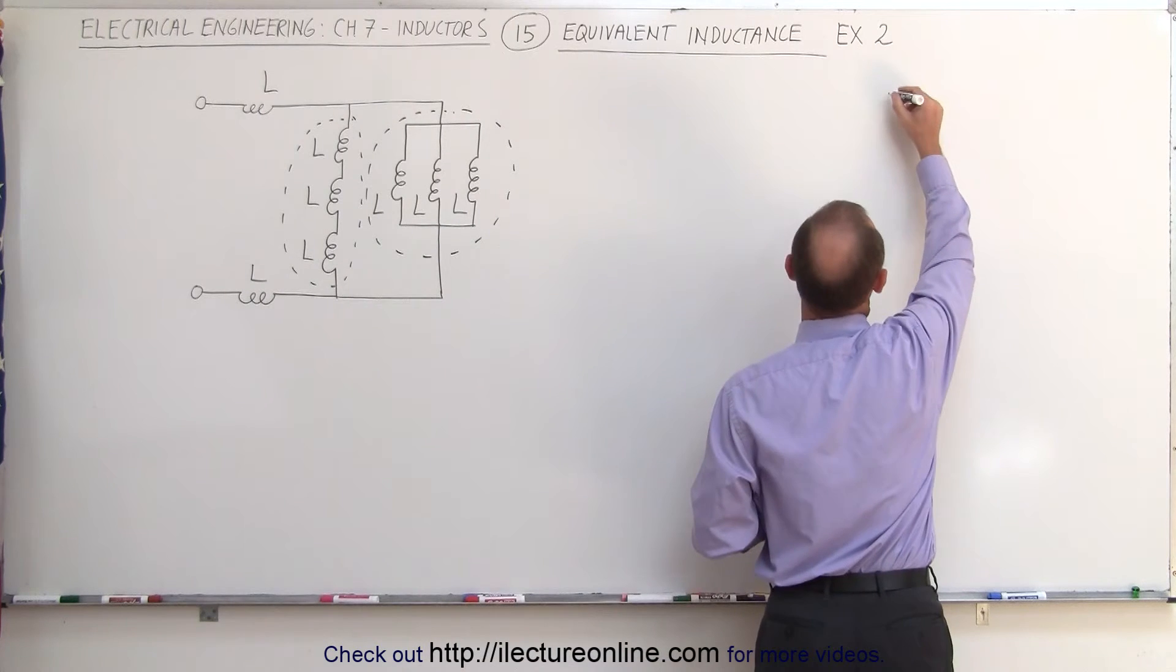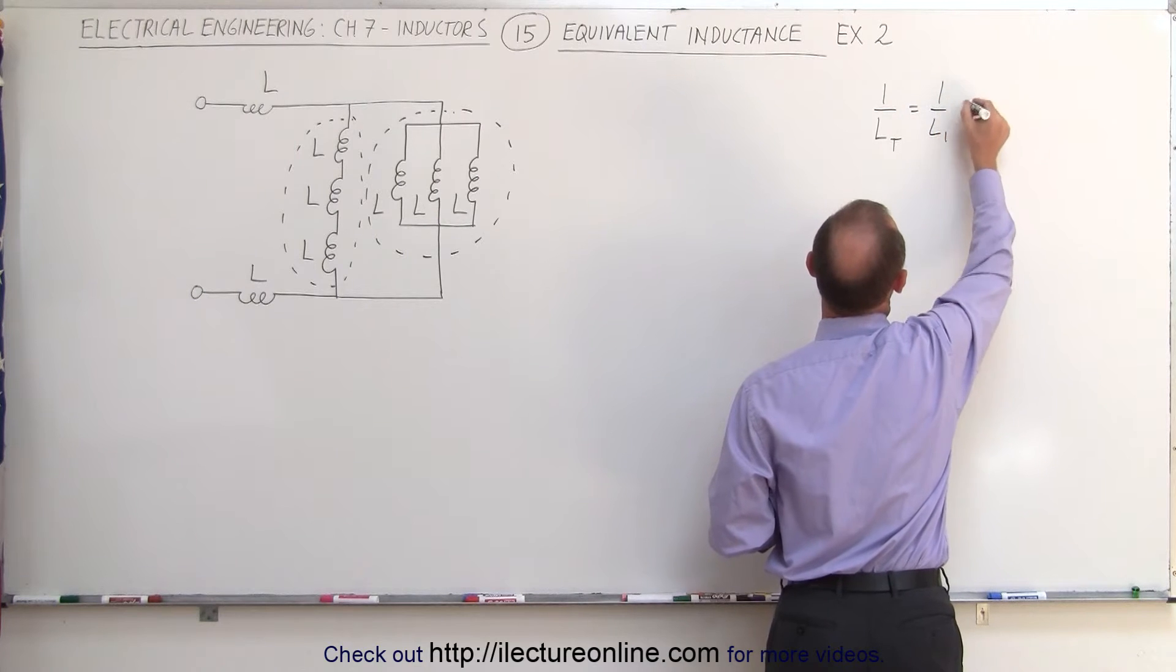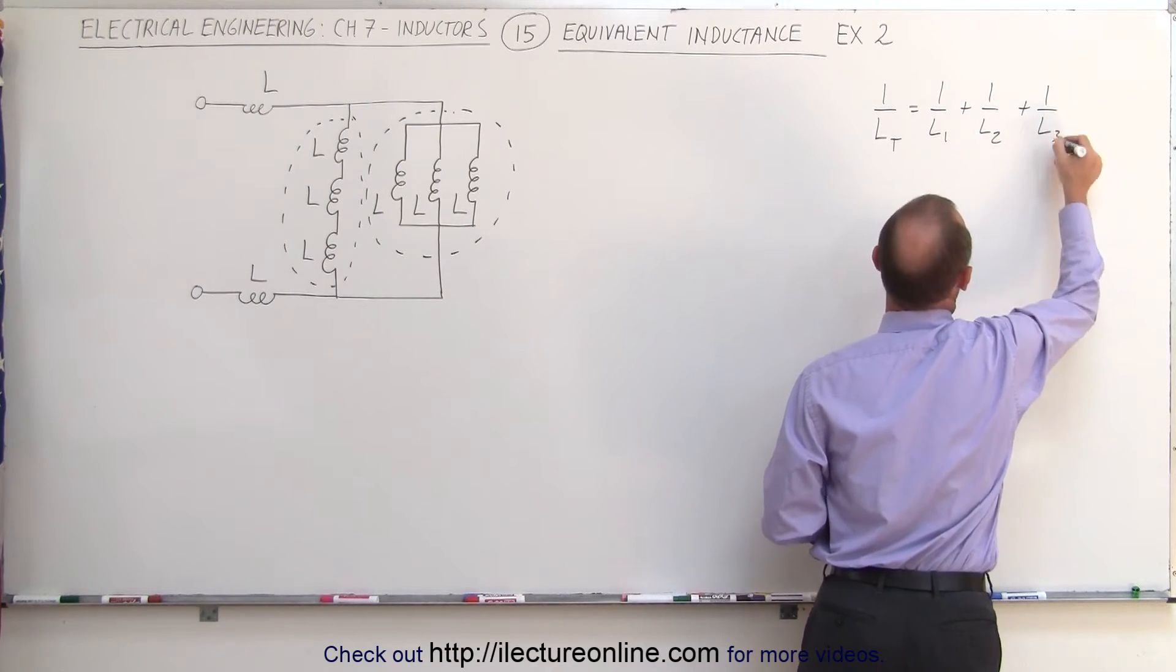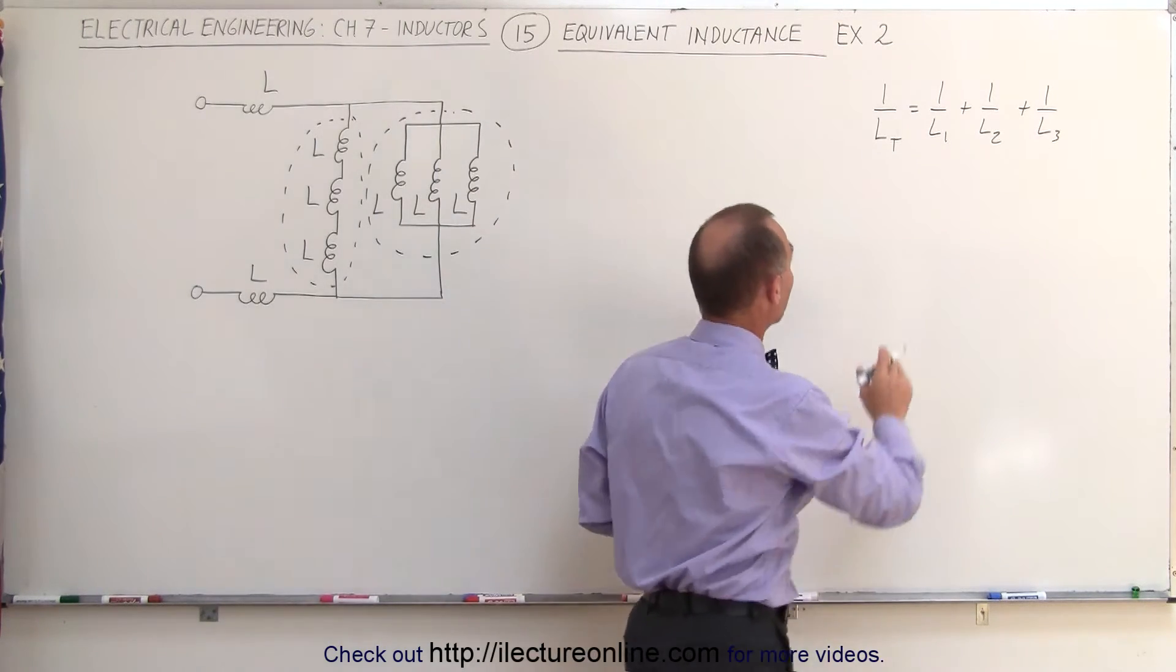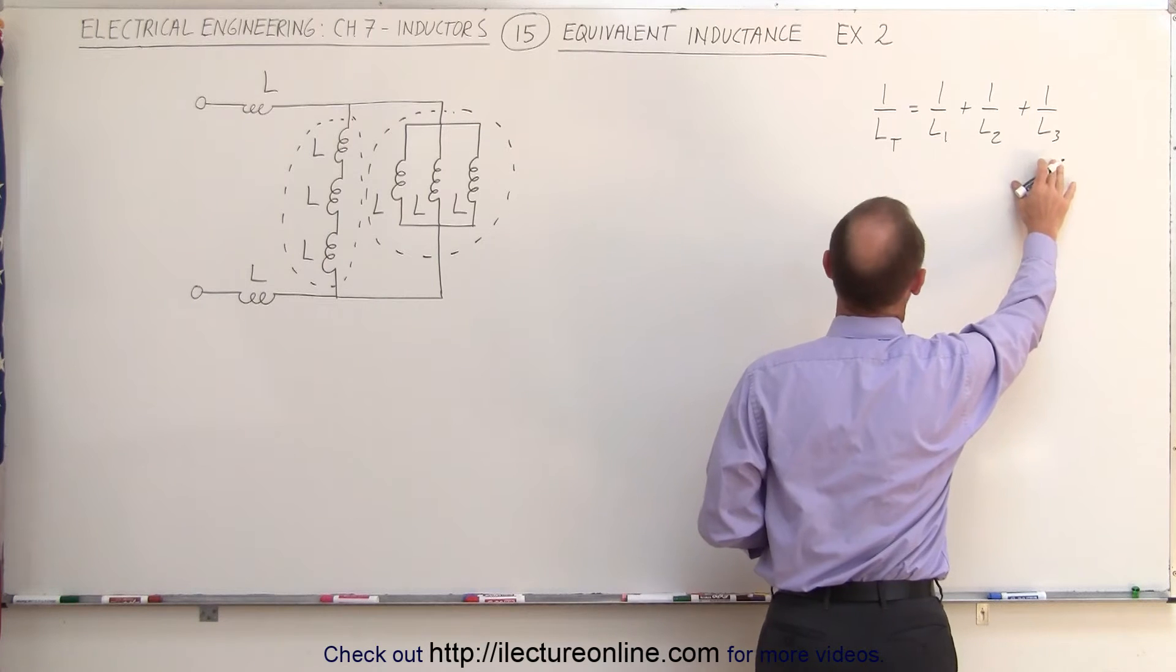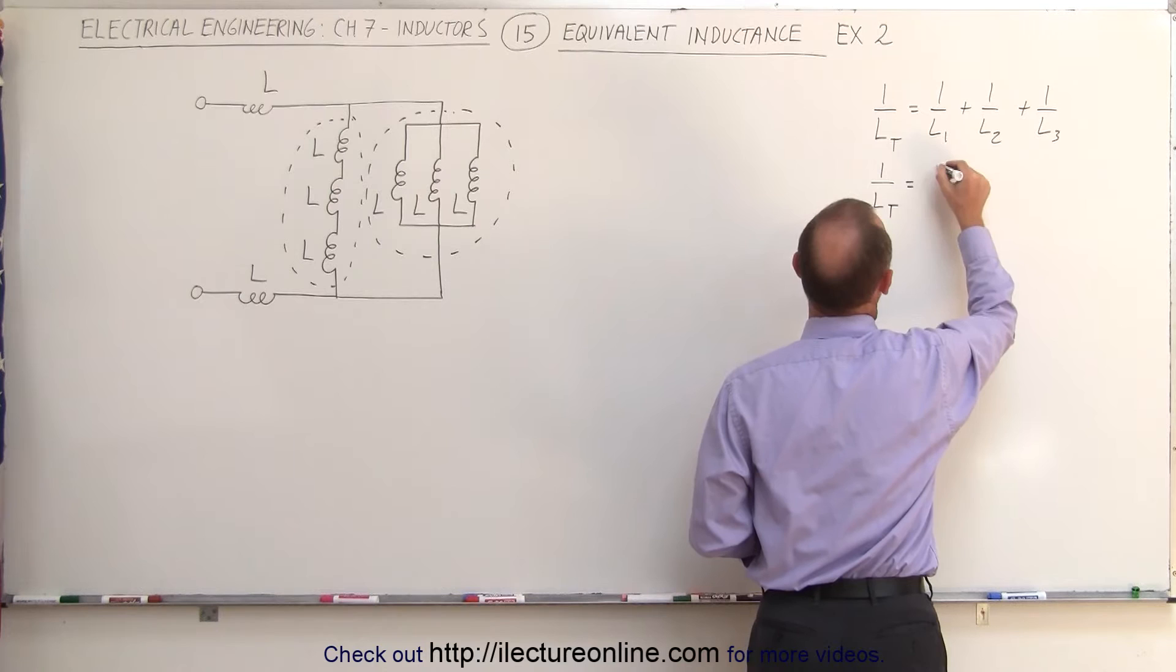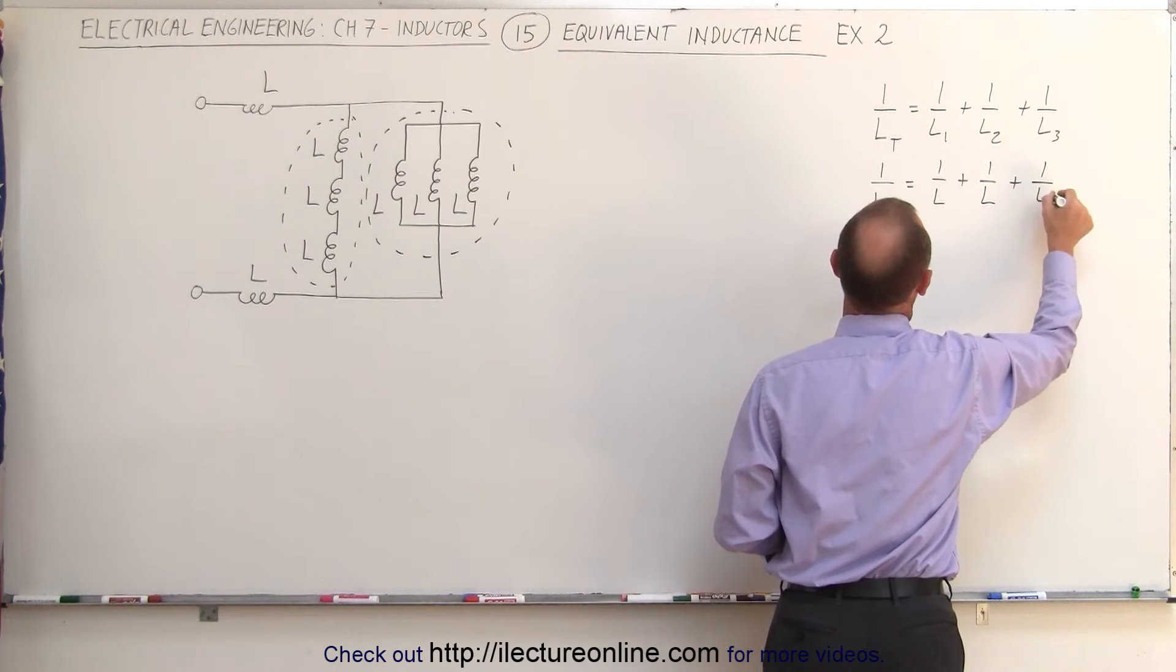You say that one over L total equals one over L1 plus one over L2 plus one over L3. Just want to show you that this will end up being one third L. So since they're all the same, L1, L2, and L3, we can then say that one over L total is equal to one over L plus one over L plus one over L.